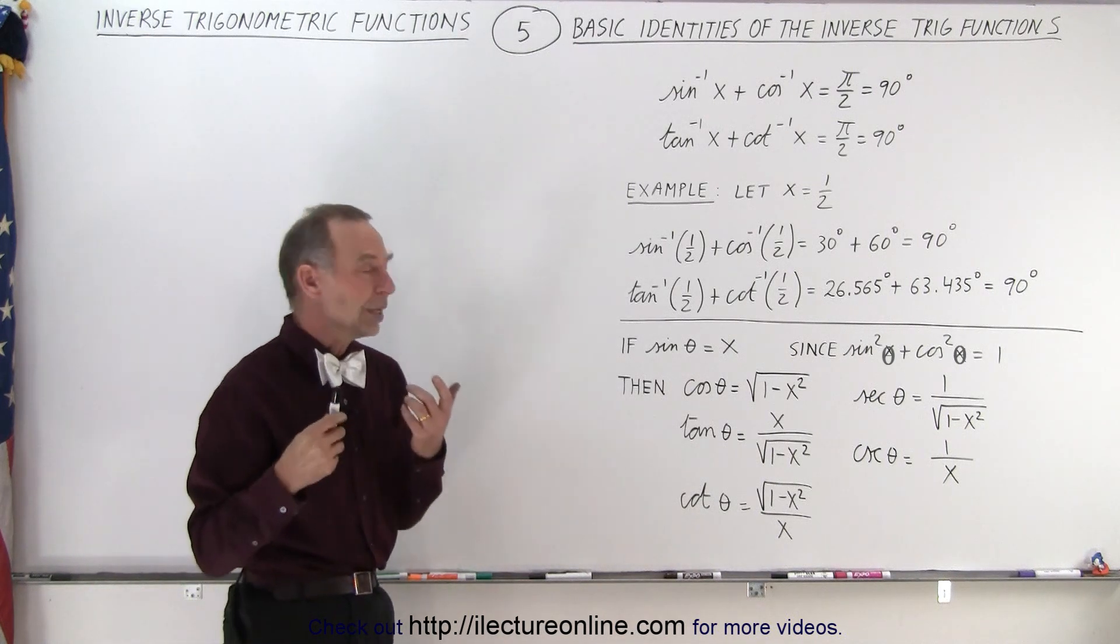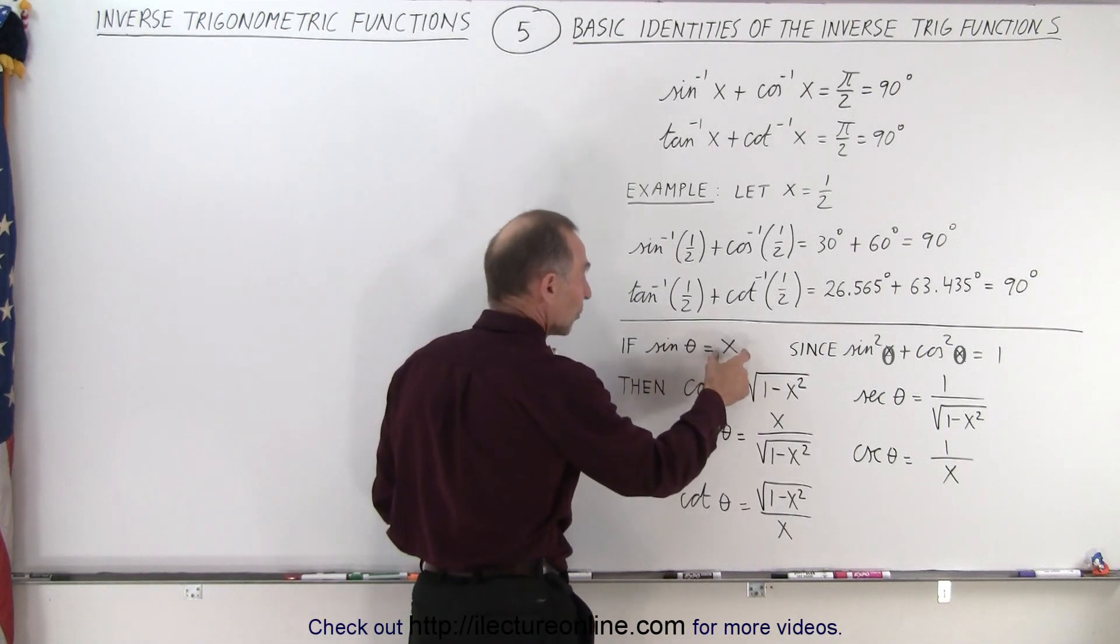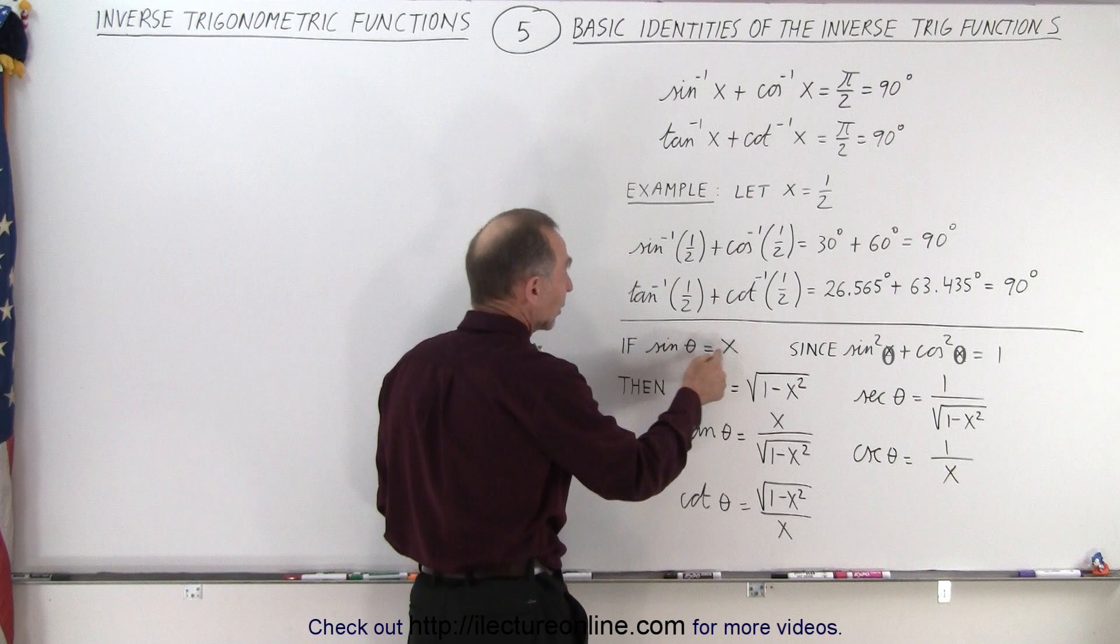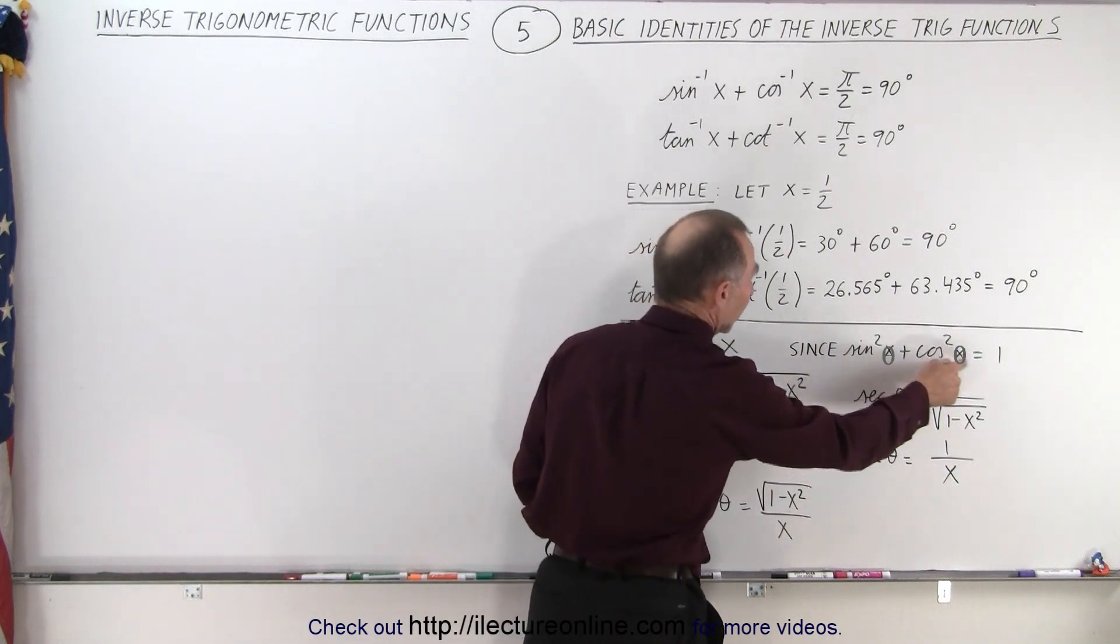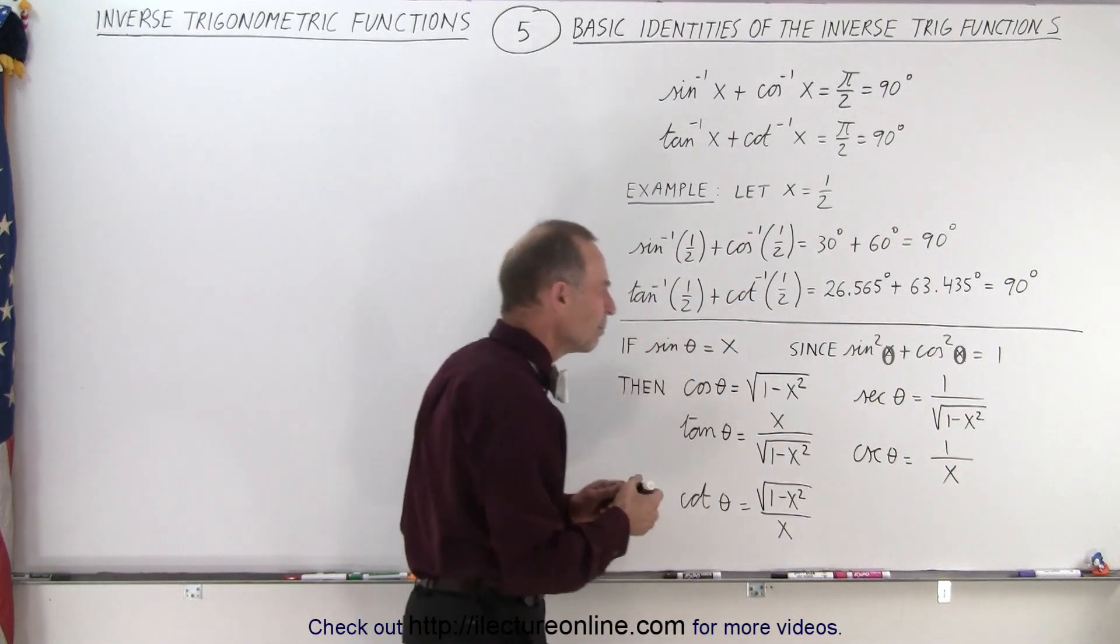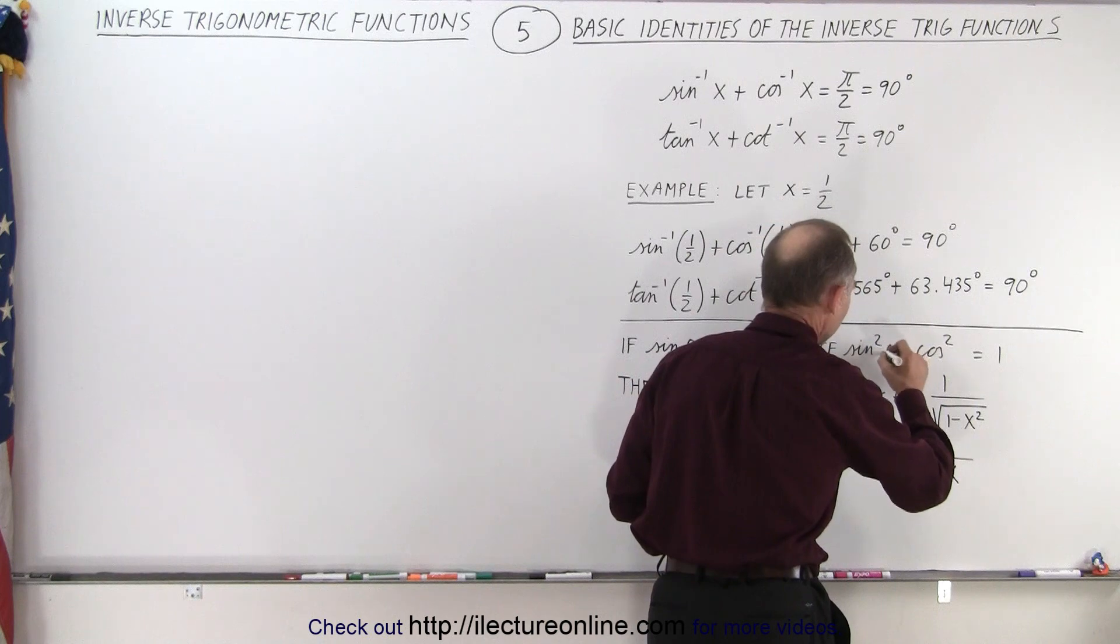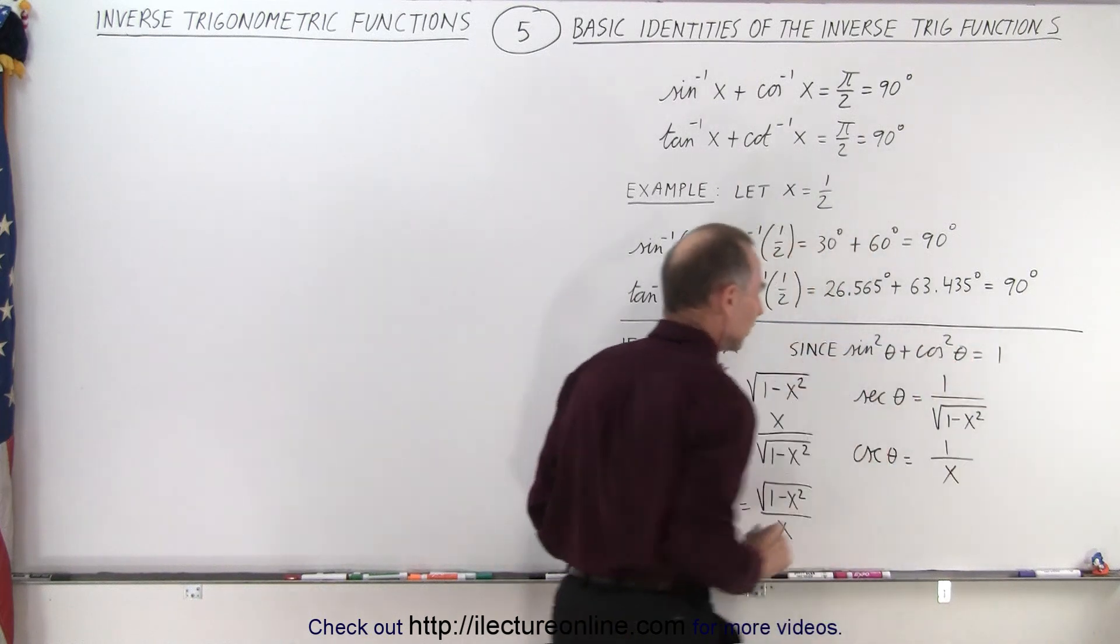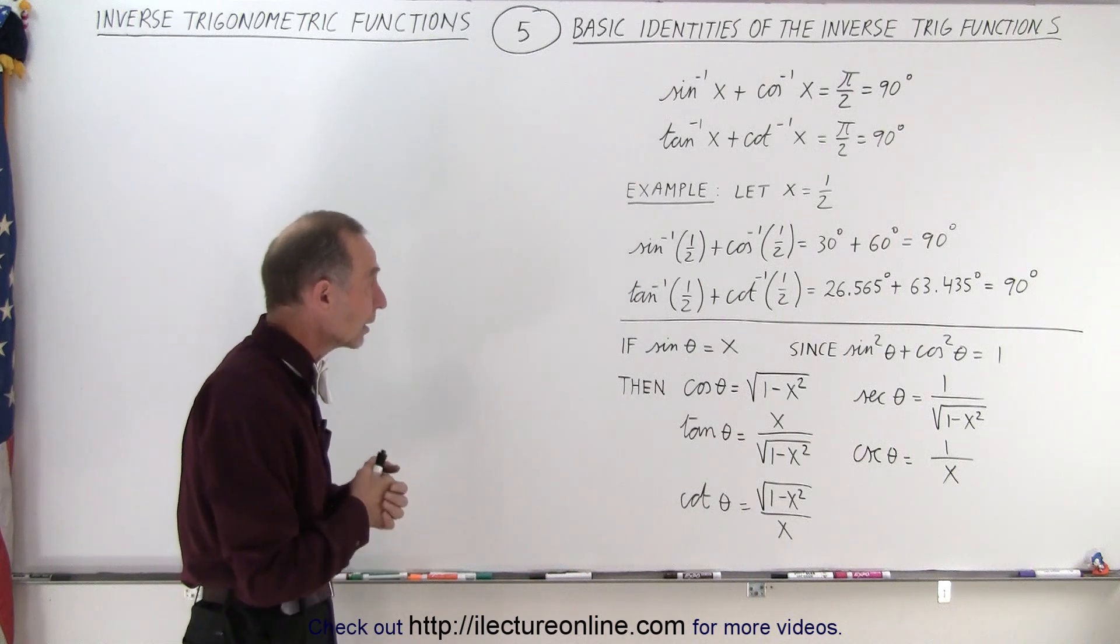And then since we know that the sine of theta can be set equal to some number, for example the sine of 30 equals 1/2, and we know that sine squared of x plus cosine squared of x equals 1. Or maybe what I should do here so we don't get confused, let me write theta and theta. That's probably better. So we know that sine squared of theta plus cosine squared of theta equals 1.